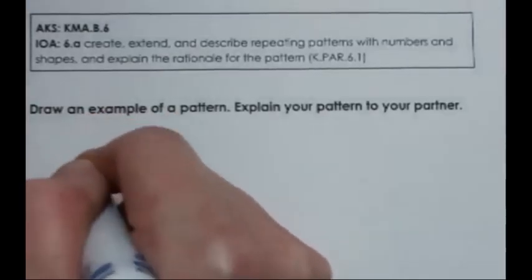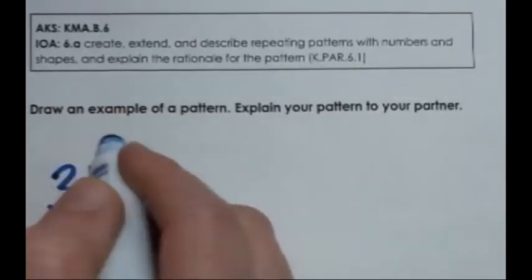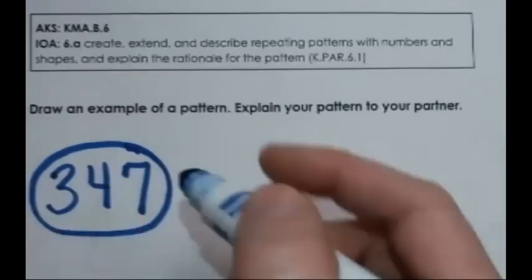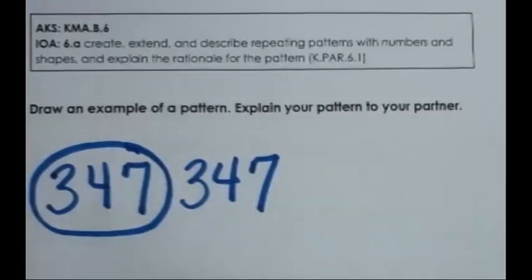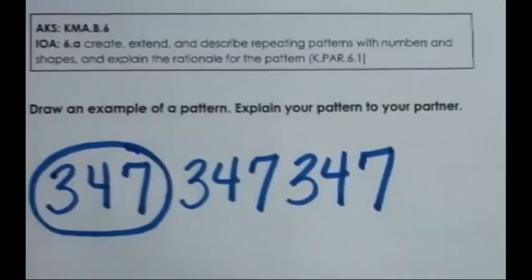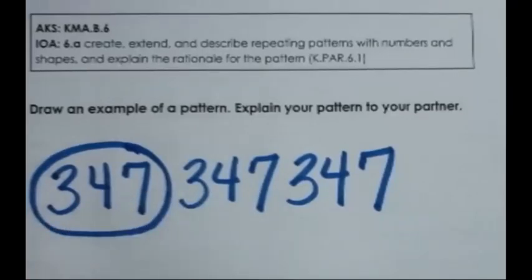For example, using numbers: decide on a core, such as 3, 4, 7. Circle that core to identify it. For this to be a repeating pattern, the entire core must repeat at least once: 3, 4, 7 again. A student may stop there or repeat it again. This is a repeating pattern because the core — 3, 4, 7 — repeats, which is what makes it a repeating pattern.